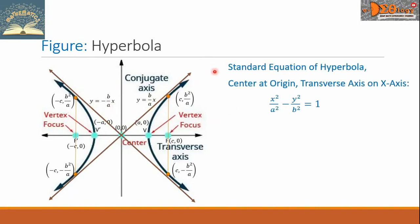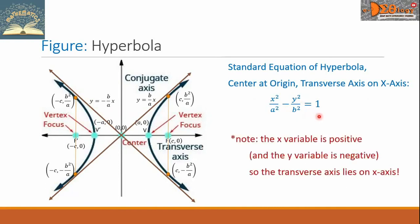This is now the standard equation of hyperbola, the center at origin, the transverse axis on x-axis. This is X² over A² minus Y² over B² all equal to 1. Take note that the X variable here is positive and the Y variable is negative. So, the transverse axis lies on x-axis.